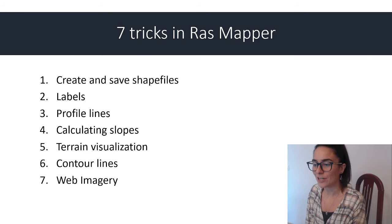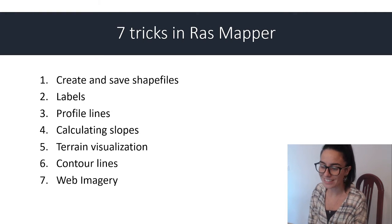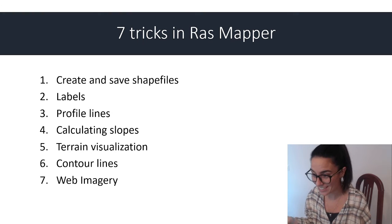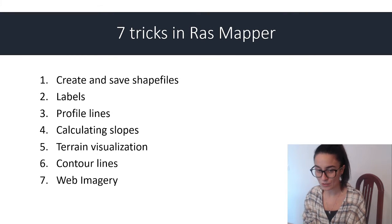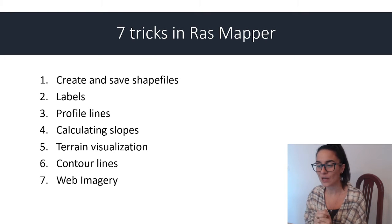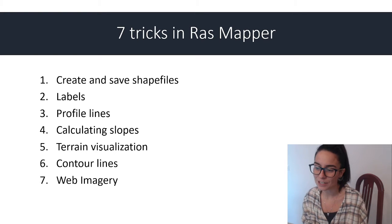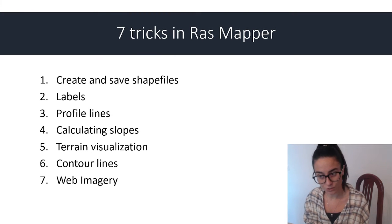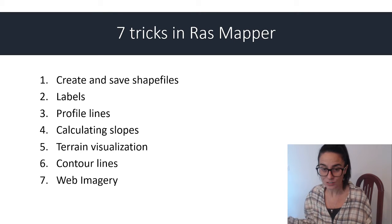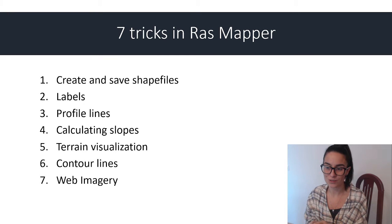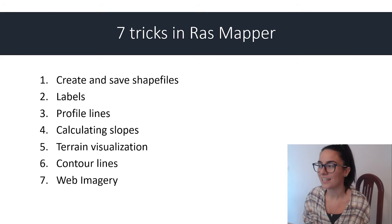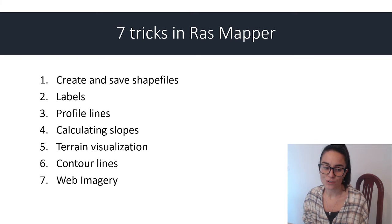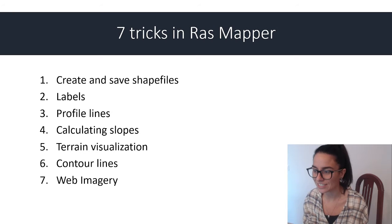Hello. We are going to see today 7 tricks for RustMapper for doing different GIS tools. This is the list: we are going to create shapefiles, we are going to label them, we will also create profile lines that add another type of shapefiles, we will calculate very quick slopes, we will see different configurations for terrain visualization, we will also plot contour lines and we will add imagery. Those are tools that I use a lot and sometimes I rather do them in RustMapper than QGIS, Rmap, Rpro, GlobalMapper, or any others because they are very specialized for river engineering.